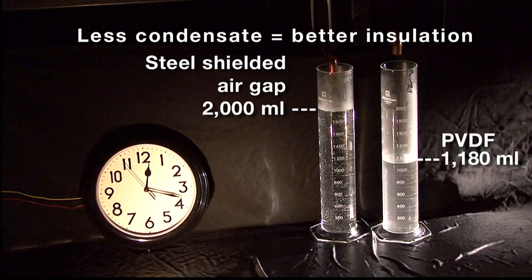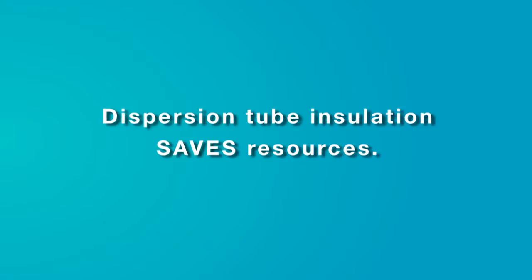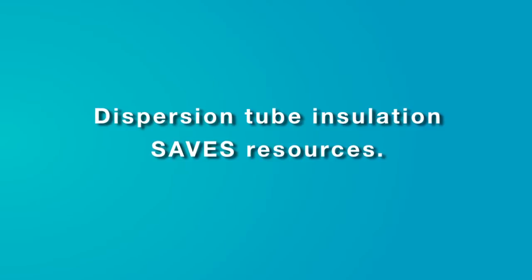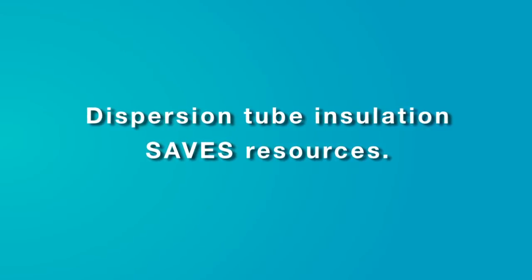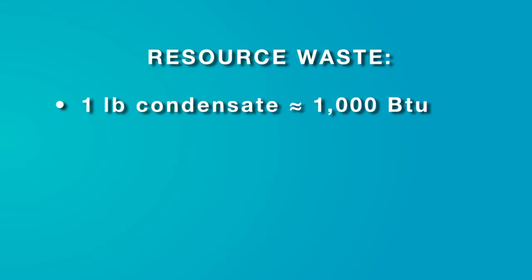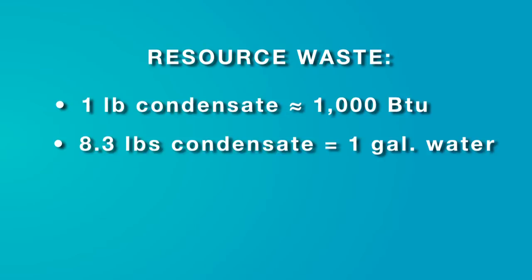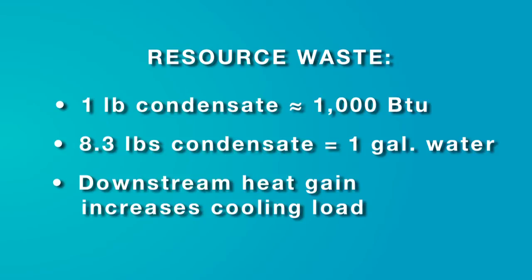Why are the results of this test so important? Because unnecessary heat gain and condensate production wastes energy and water. Every pound of condensate produced wastes about 1,000 BTUs. That's the energy originally used to change that pound of water into steam humidification. And every 8.3 pounds of condensate sent to a drain wastes a gallon of water. And downstream heat gain increases the cooling load.